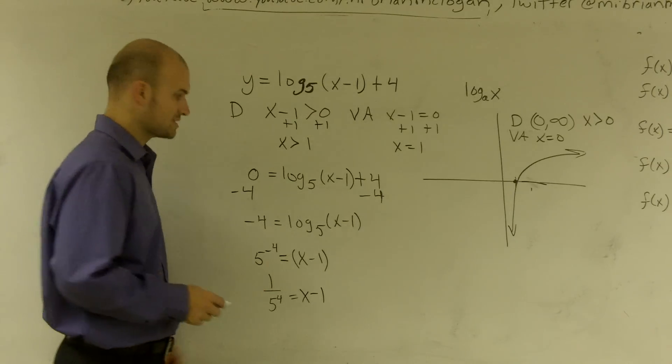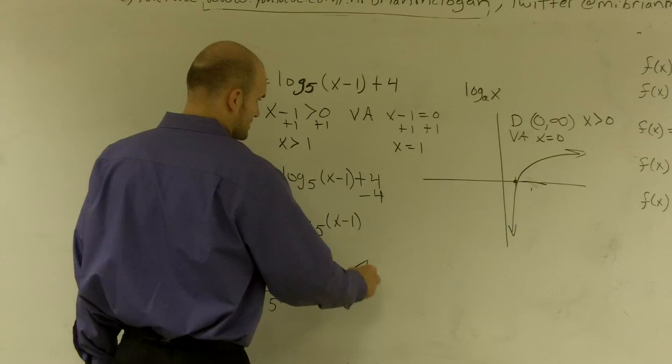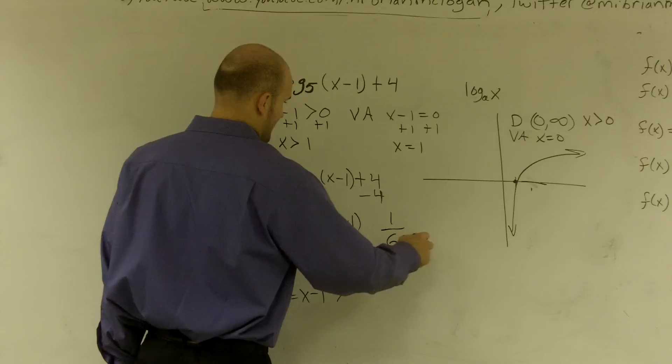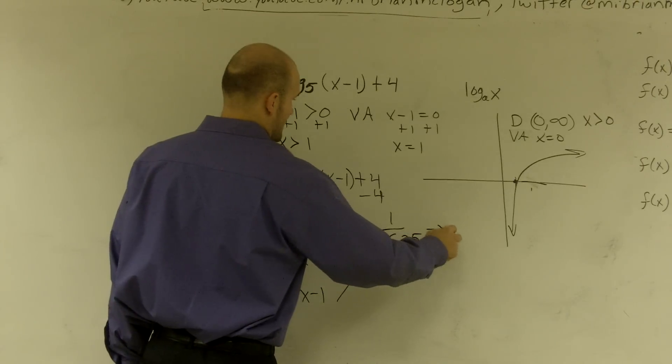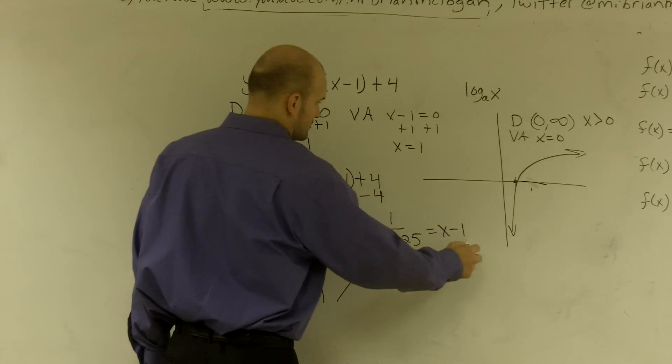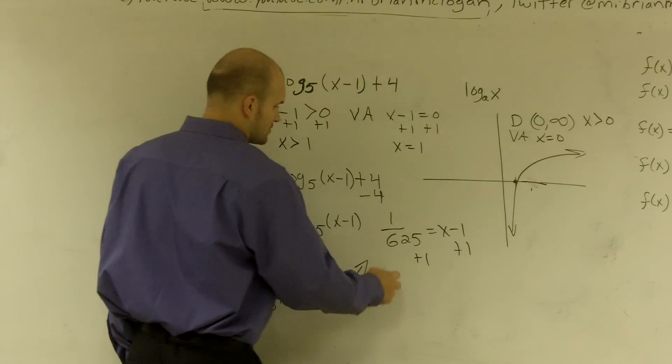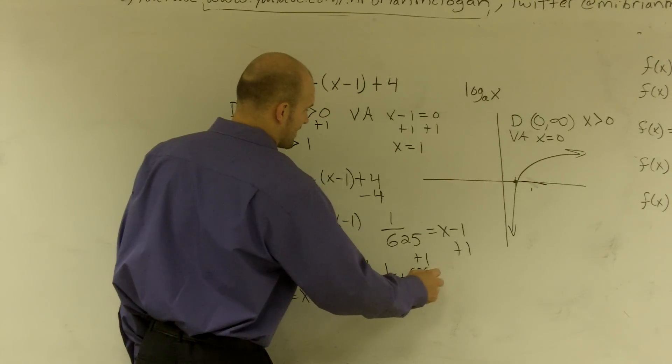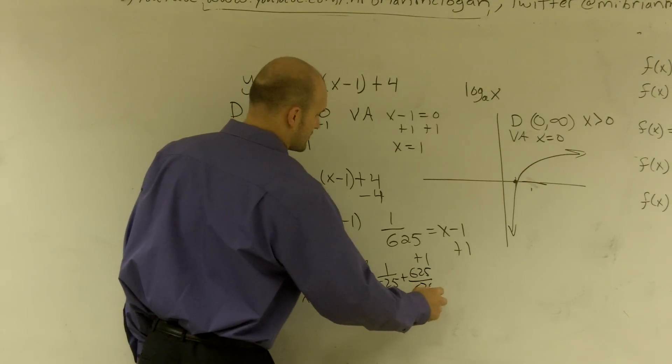So 1 over 625 equals x minus 1. Then I need to add 1 to both sides, so I have 1 over 625 plus 625 over 625.